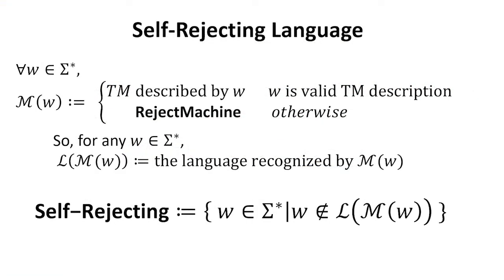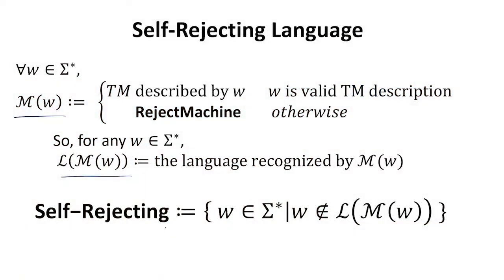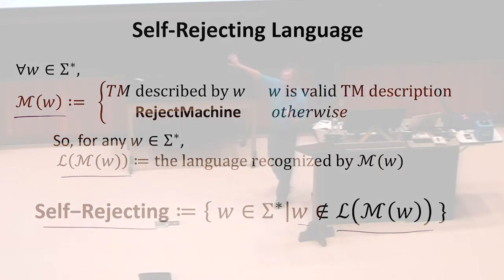So now we can define a language — the language of strings where the machine we've defined outputs one. We've got a machine described by some input string, and that's the set of all strings where evaluating that machine results in one. Now we're going to define a new language: all the strings where the machine that string defines does not include itself in its own language. That means if we ran that machine on the string that described it, it would not output one — it might output something else, run forever, or get stuck. This should start to seem pretty strange.